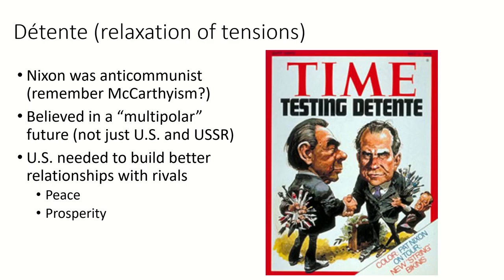But Nixon was fundamentally a foreign policy realist. He believed in a future where many different countries would have a seat at the table, and that in order to lessen the dangers of the Cold War, they needed to build better relationships with their rivals. The strategy of trying to lessen and relieve tensions with the Soviet Union became known as détente.